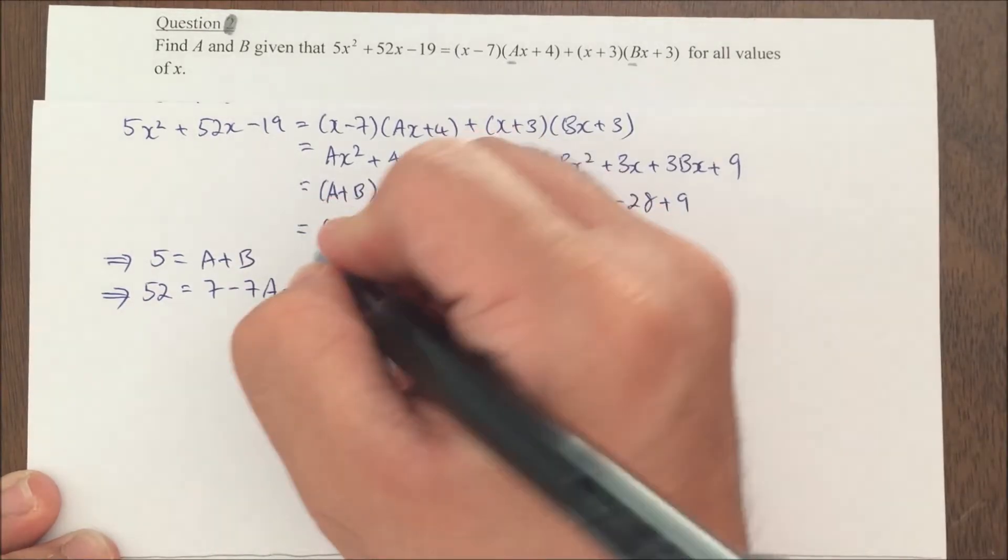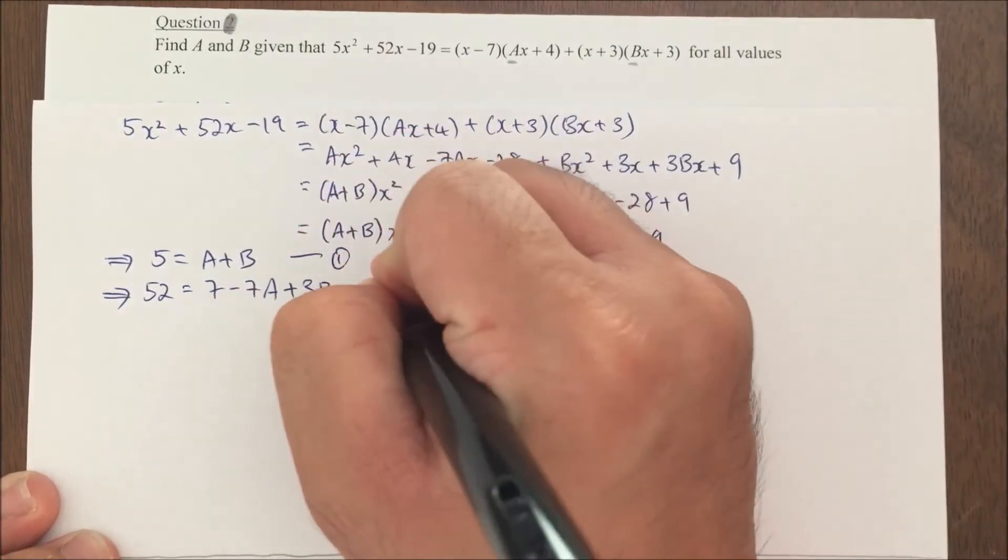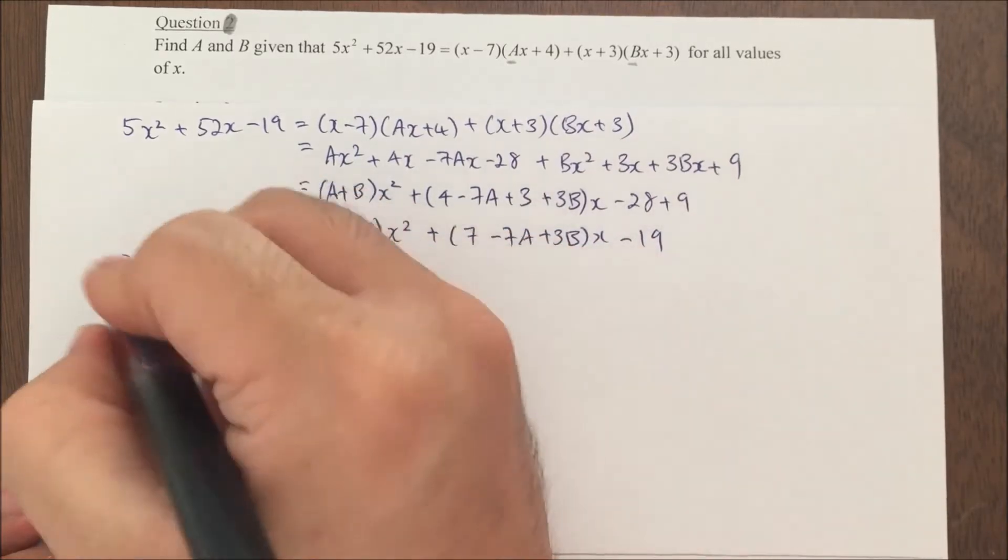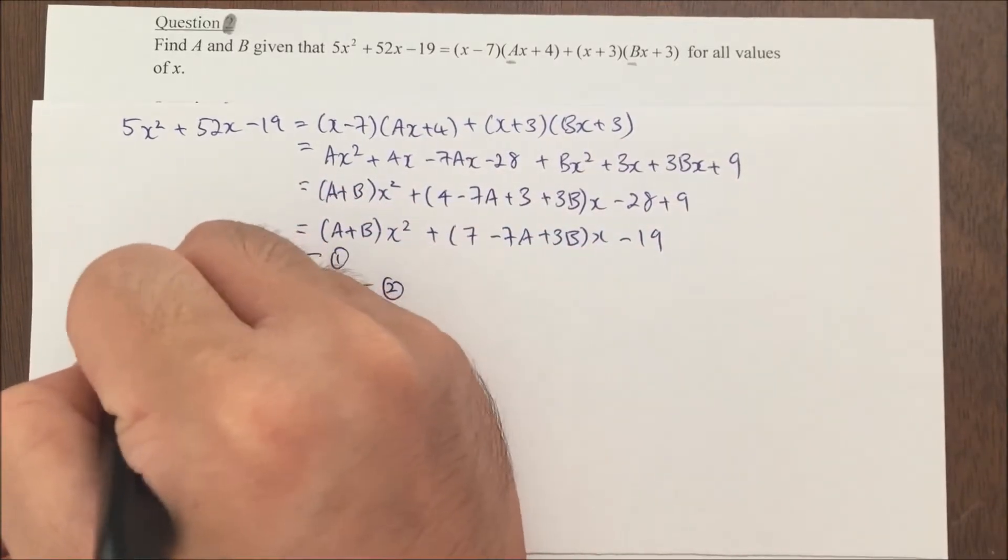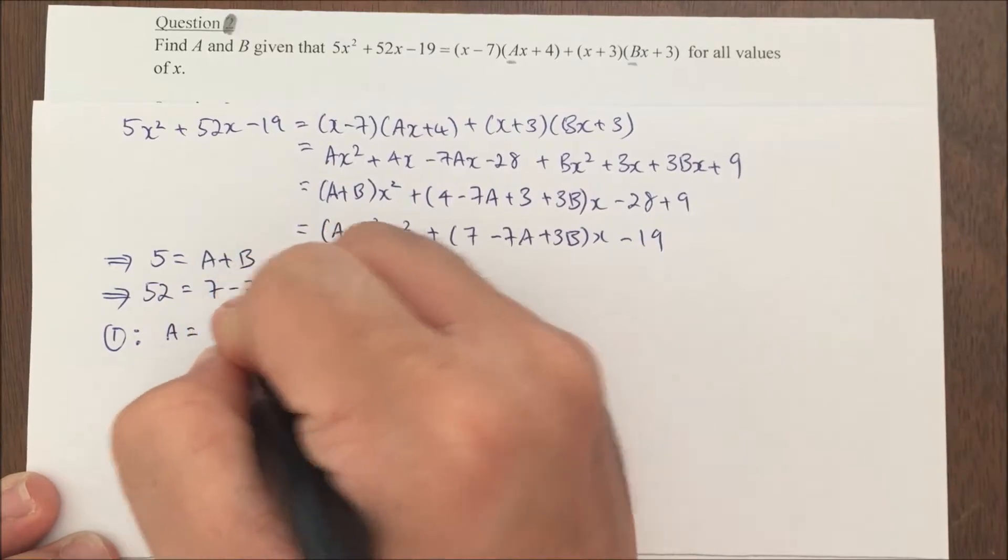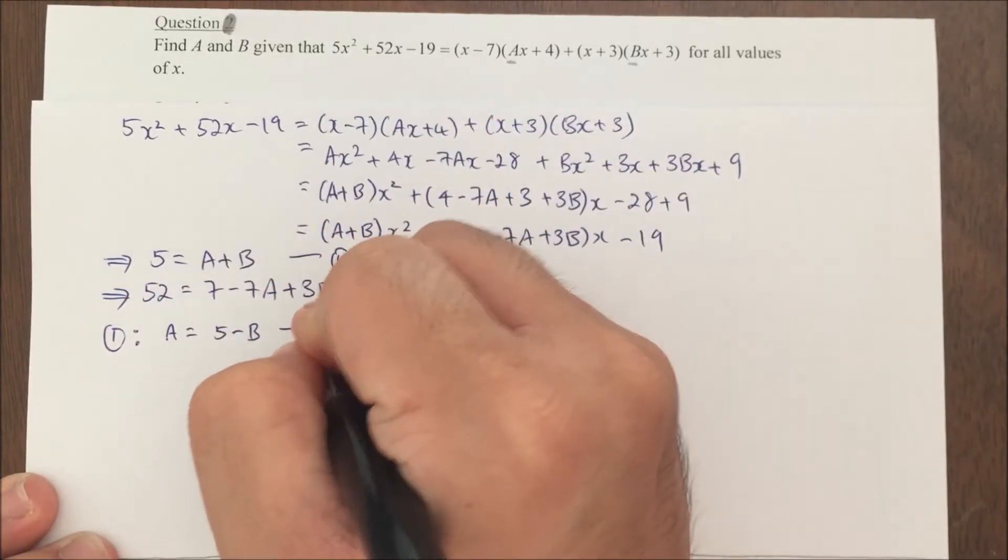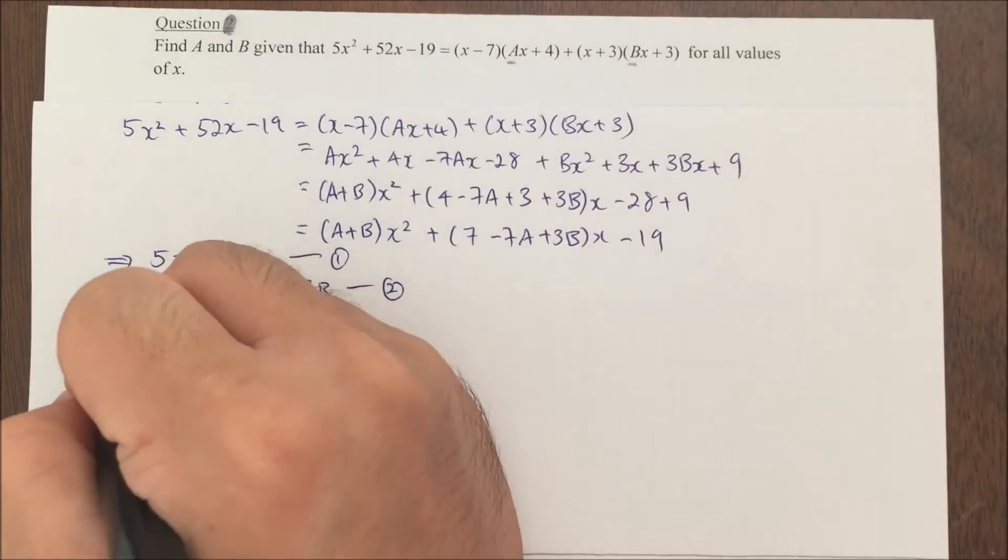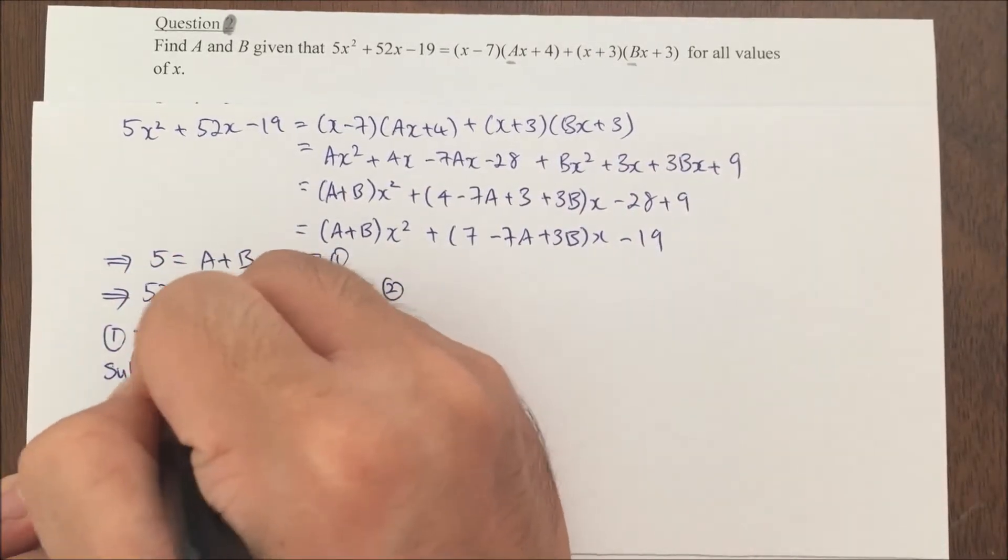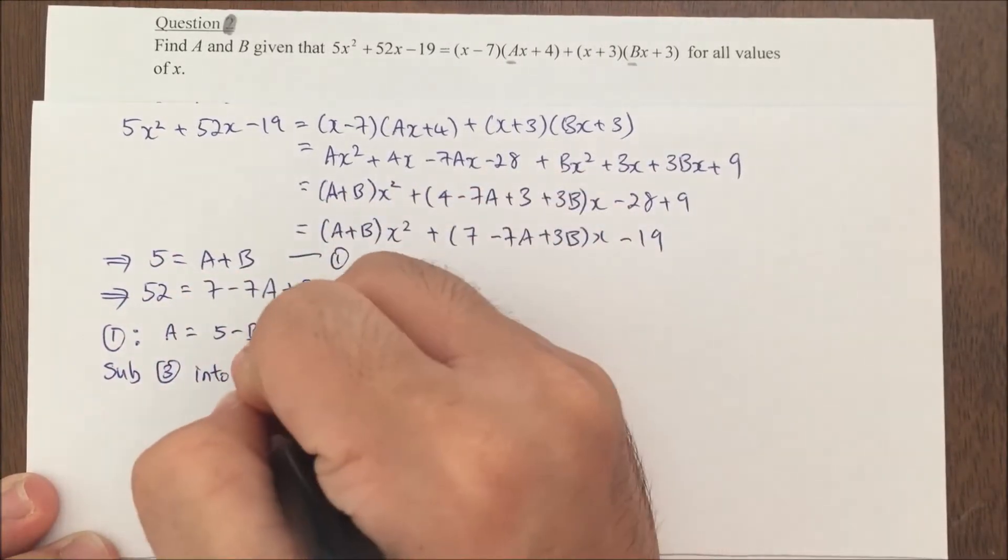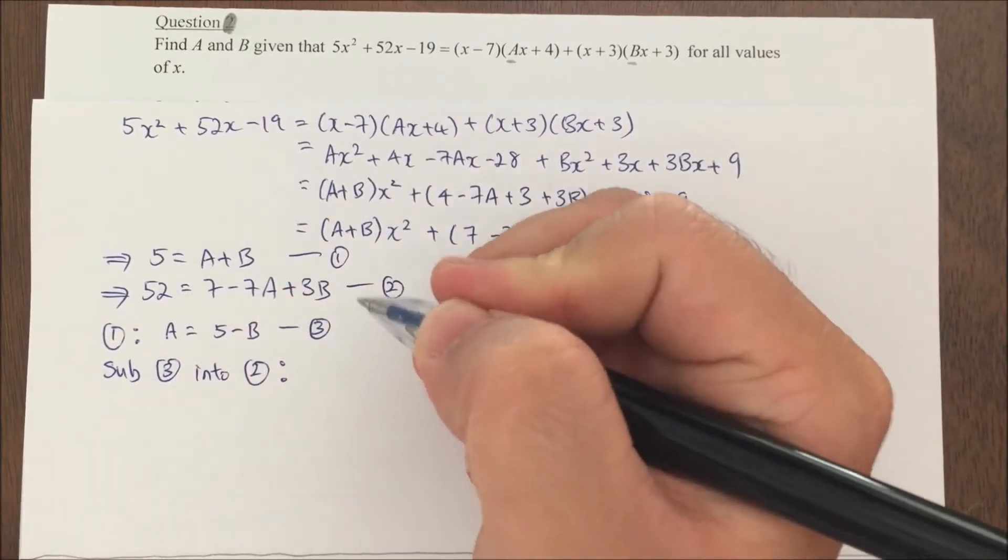So now I'm just solving a simultaneous equation. I have 2 equations. I'll start from my first equation. I can make a my subject. a equals 5 minus b. I call this equation 3. I substitute equation 3 into my equation 2.